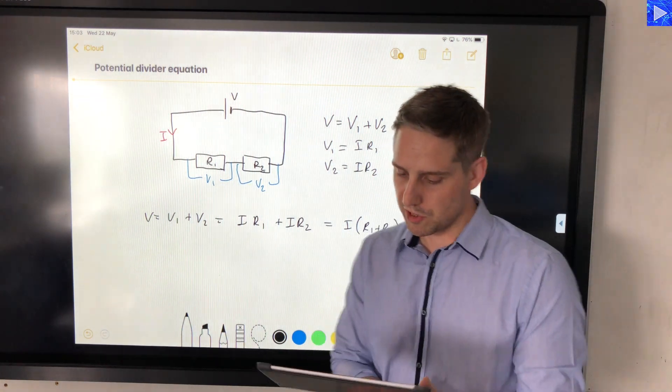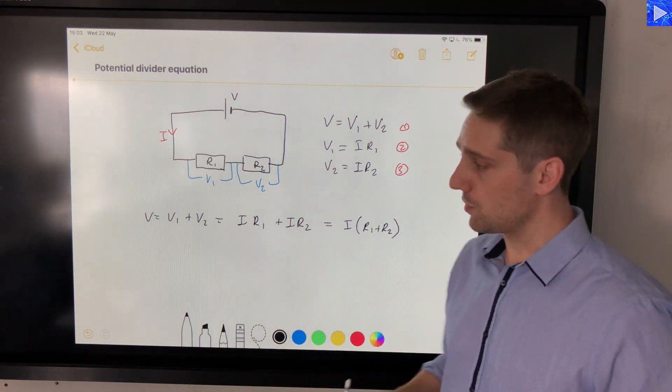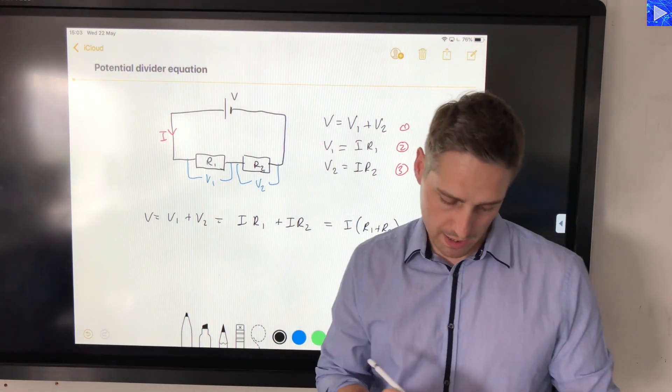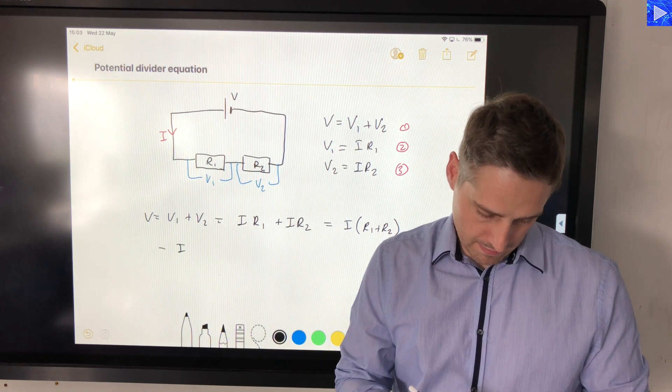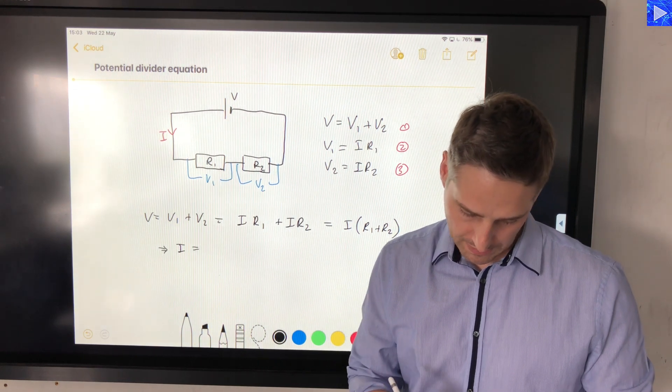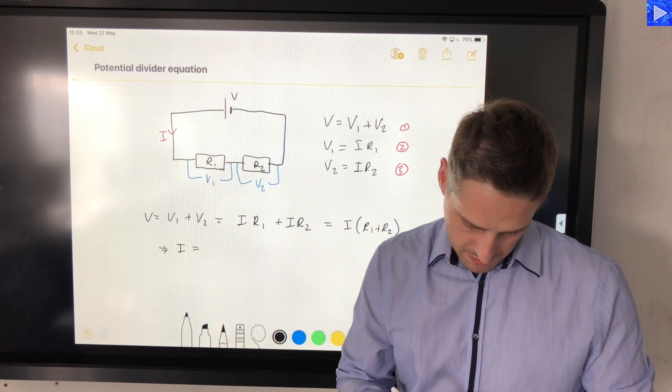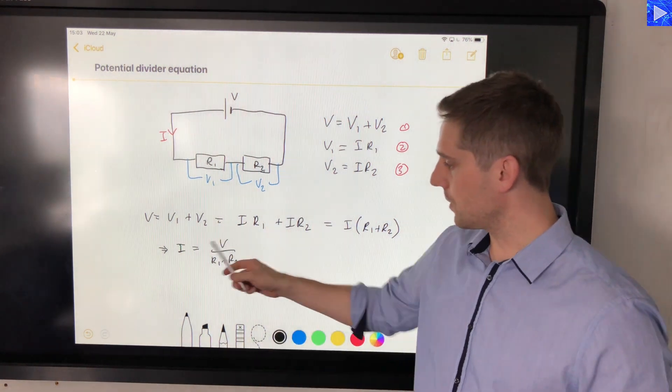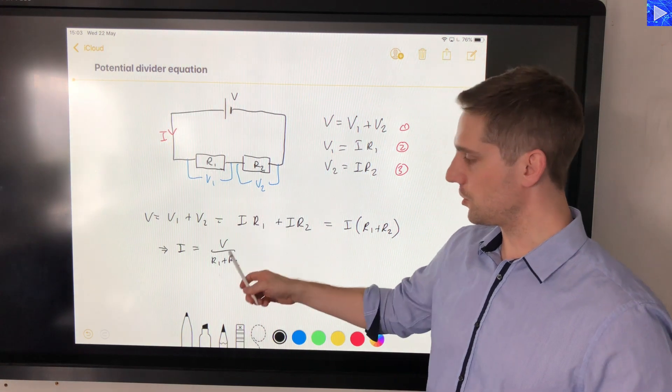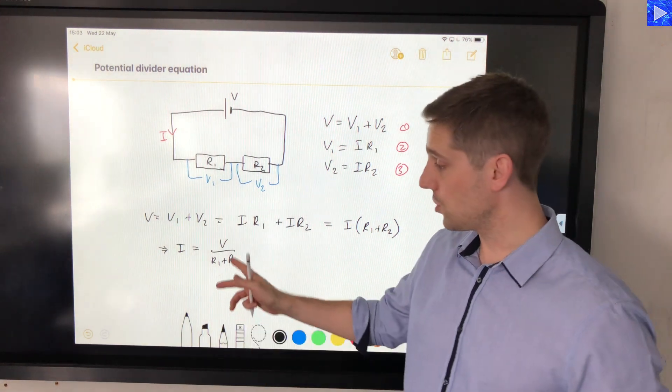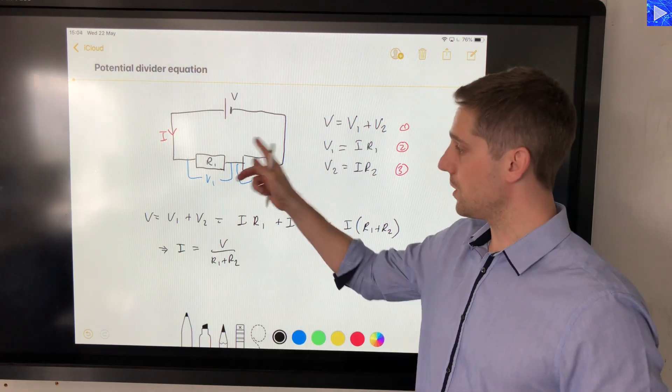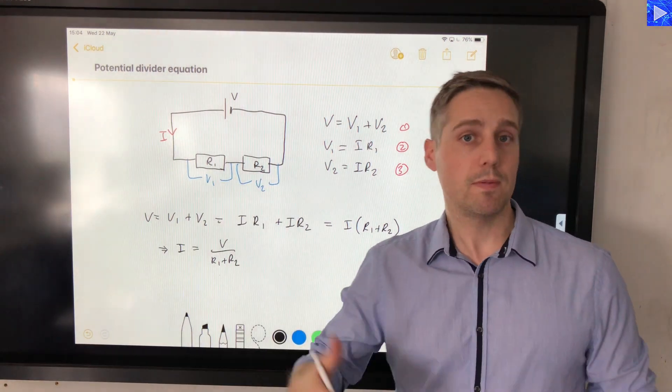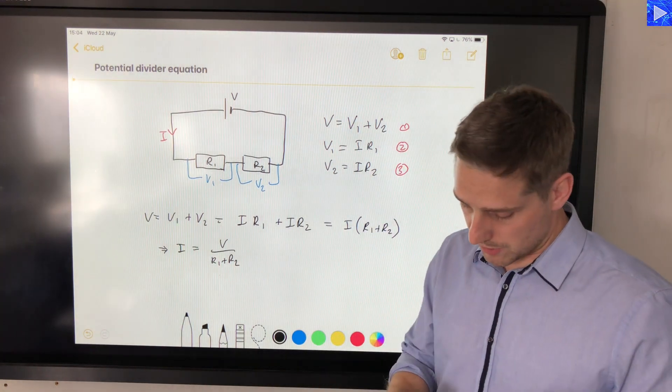We're going to use this equation to make a substitution for I in these two equations here. So I'm going to write this equation in terms of I. So I is equal to V over R1 plus R2. The current is voltage over the total resistance. You could actually arrive at that using Ohm's law for the overall circuit, knowing that the total resistance is R1 and R2. That's an alternative method. So we've got that equation.